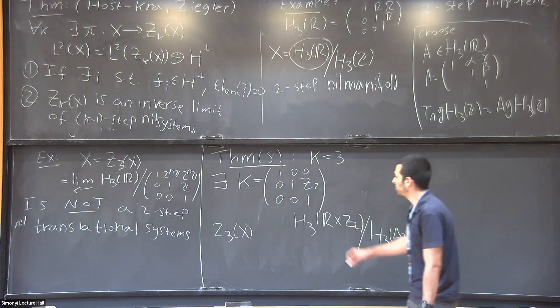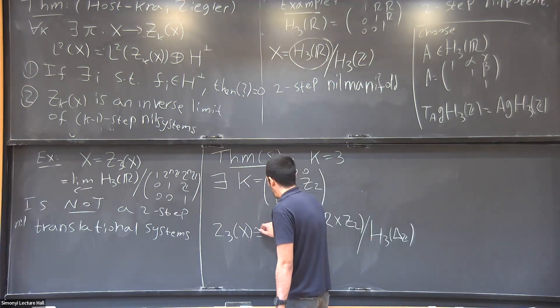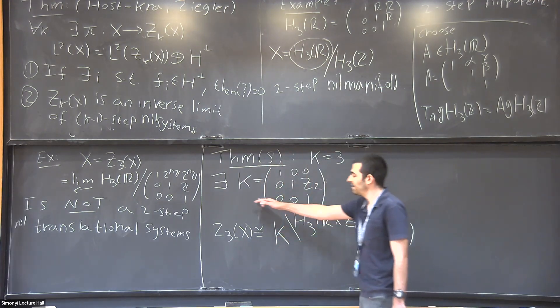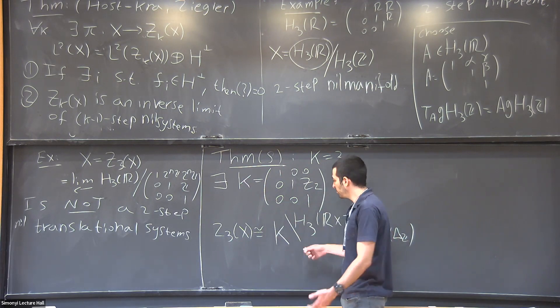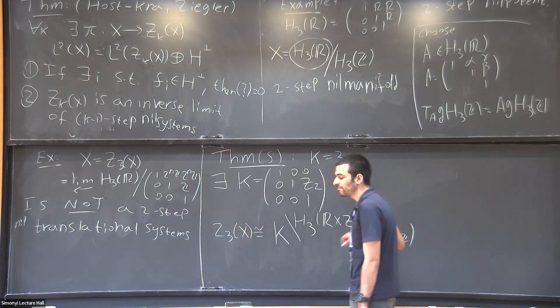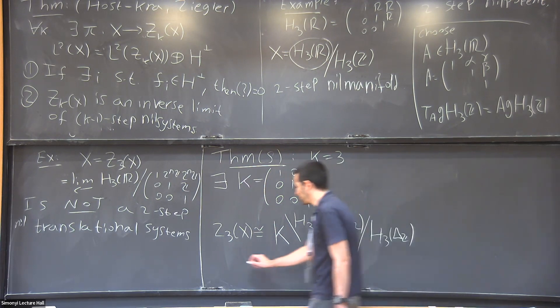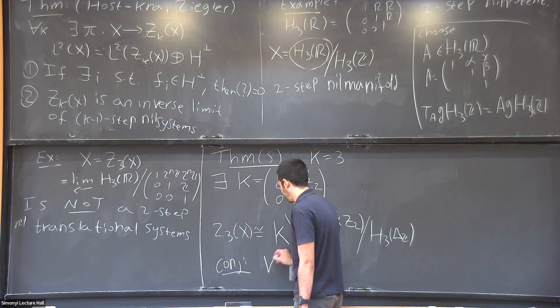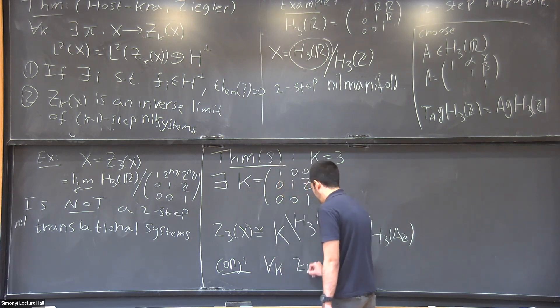But then after talking to Jonathan Gutman, I realized that one can actually say something about Z_3(X) if you only quotient by K from the other direction. So you get a new structure, the structure of cosets, a double coset. And we hope, conjecture, that this new structure is true for every k.